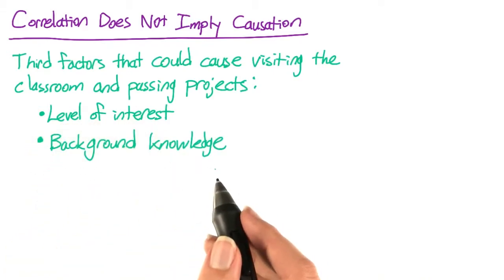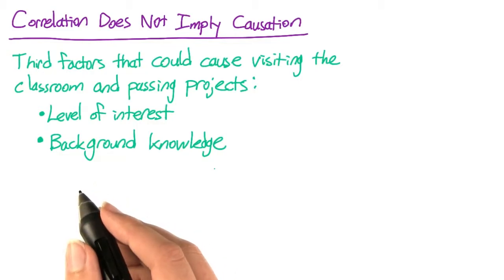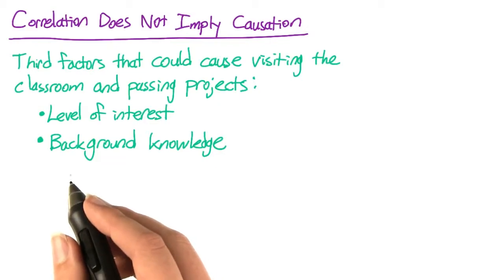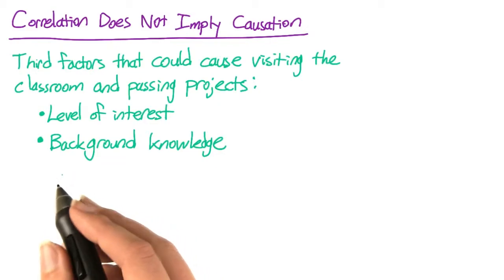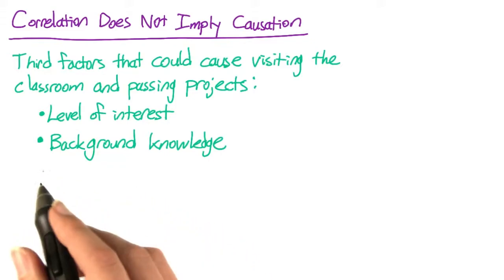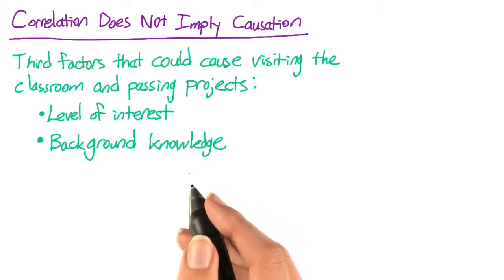Another factor might be background knowledge. Maybe some people don't have the programming knowledge they need to take the data analysis courses, and they get stuck and don't come back. If you convinced these students to come back and keep trying, they might remain stuck and not be able to make forward progress. In this case, a better solution might be taking a programming course to fill in the missing background knowledge.